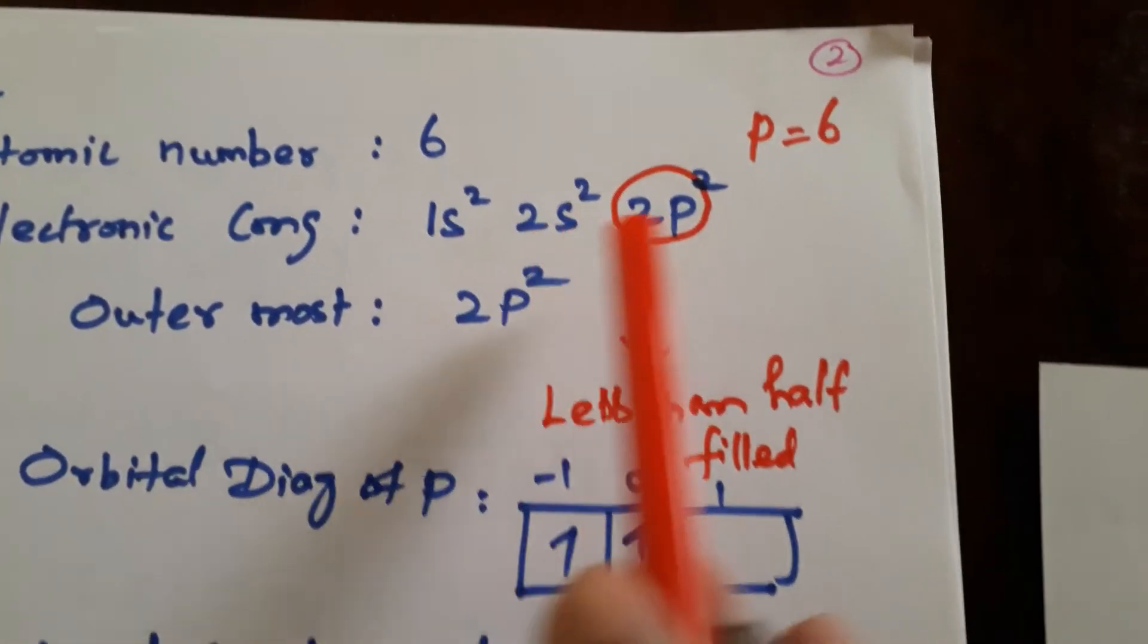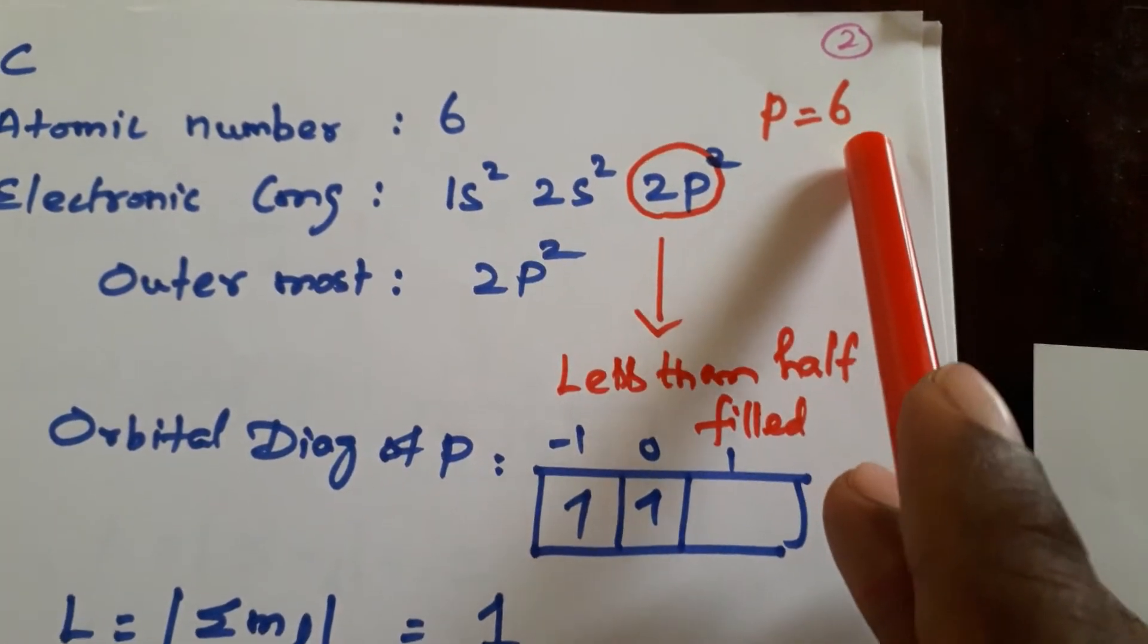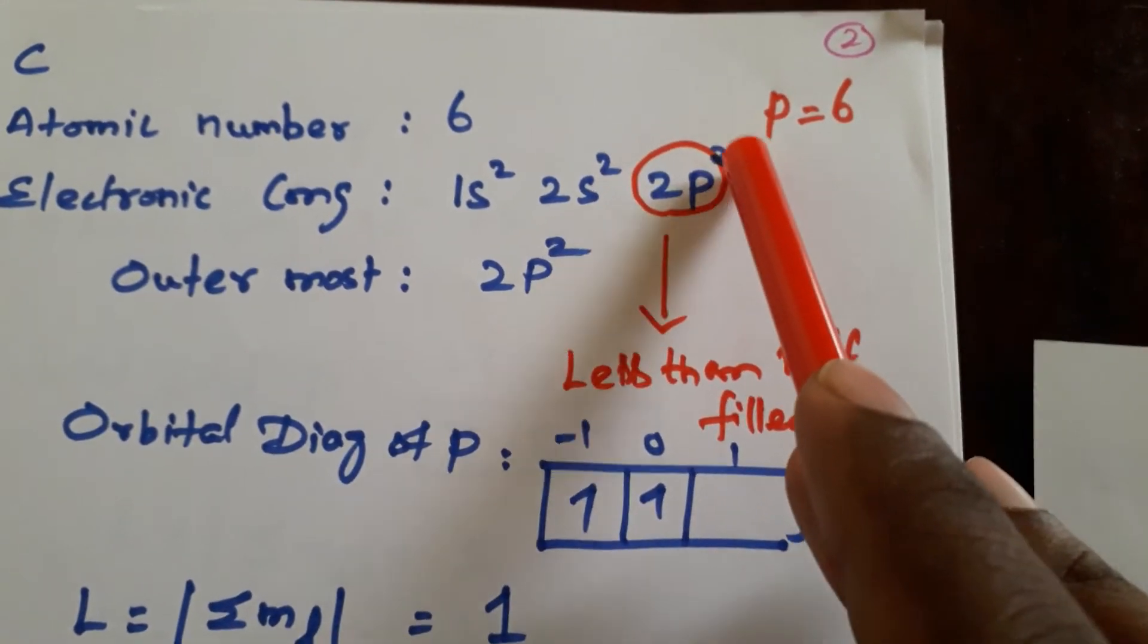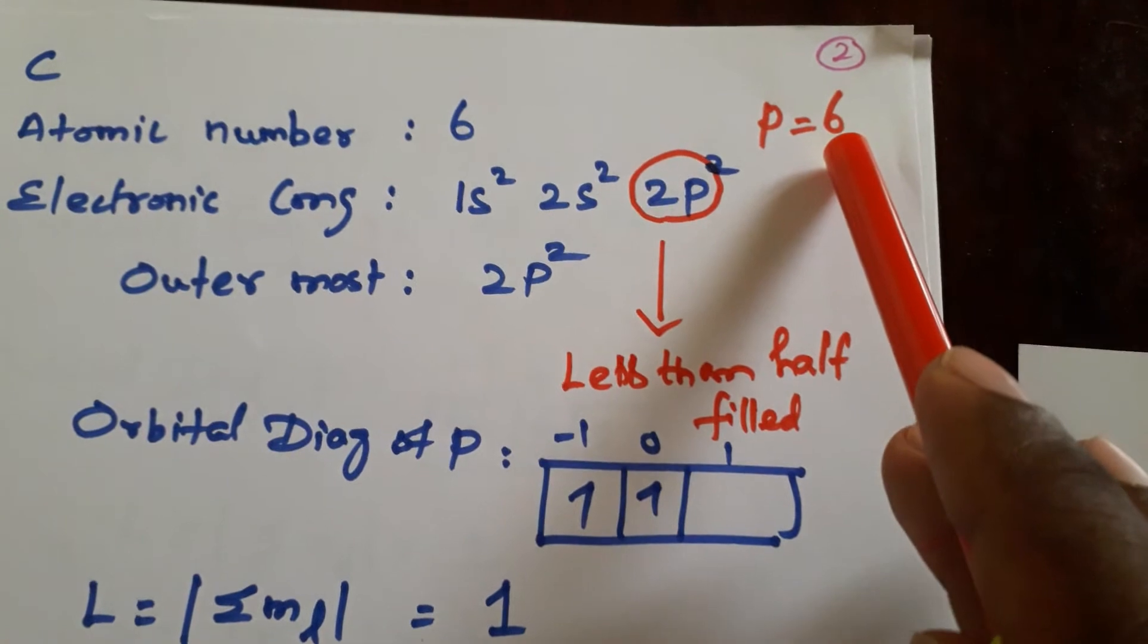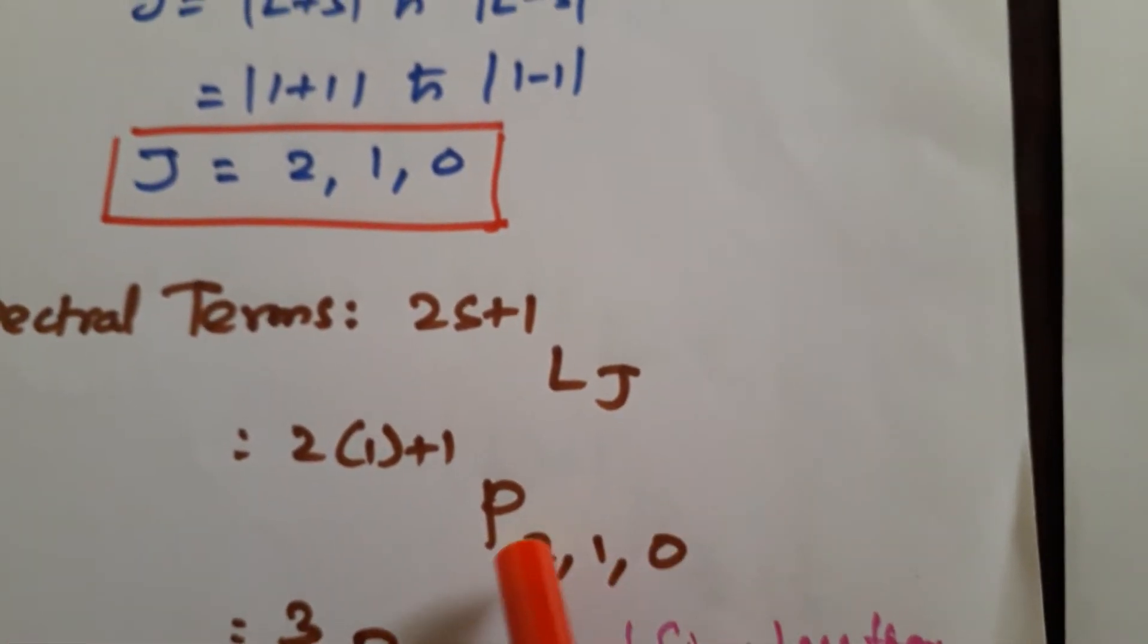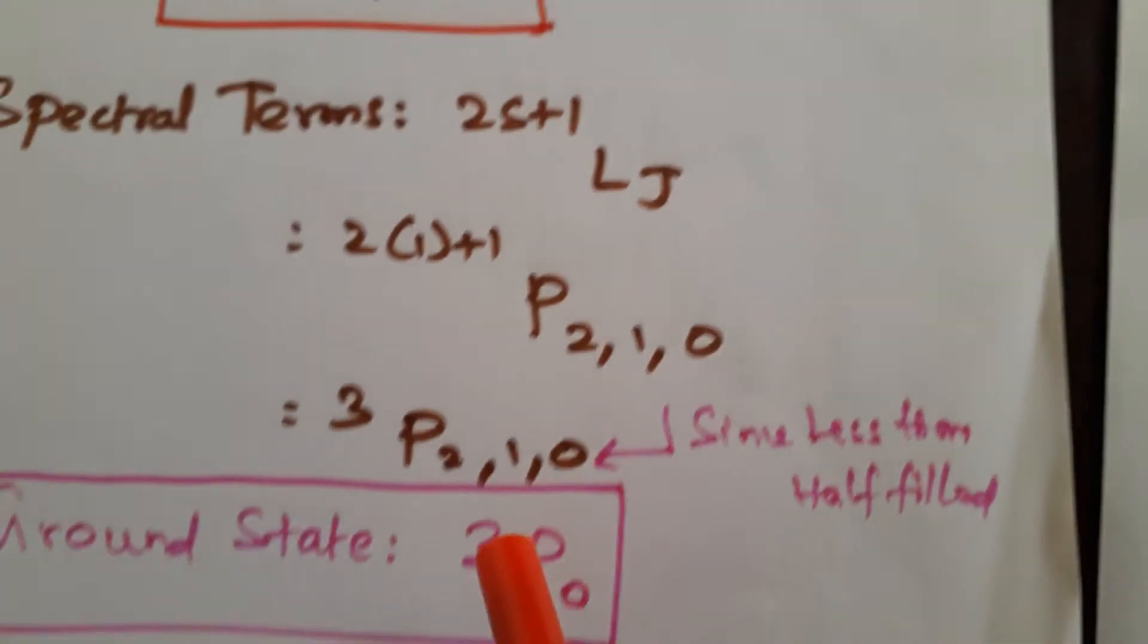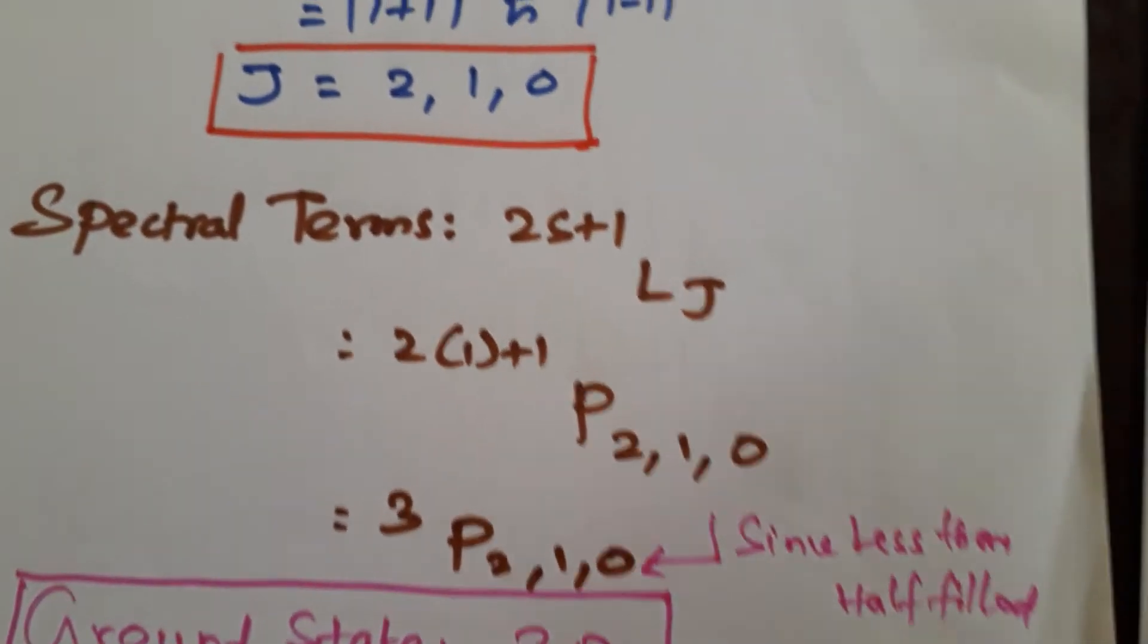For this, you just go for this p. Which one? P. P can be filled by total is 6. So the value of this is 2. So is it more than half or less than half? Half means half of this 6 is 3. So it is 2. This is less than half. If it is less than half, you take this lowest value of this J value. What is the lowest value? 0. So from this, ground state is 3P0.